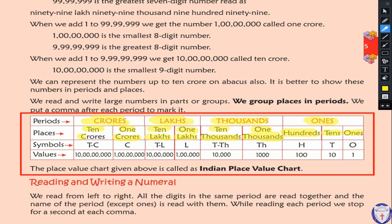In the crores period we have one crore and ten crore. The abbreviation for crore is C, and ten crore is TC. In lakhs period, ten lakhs is written as TL and one lakh as L. In thousands period, ten thousands is TTH and one thousands is TH. In the ones period, hundreds is noted as H, tens as T, and ones as O.